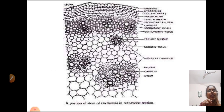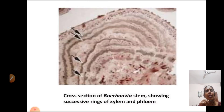You can see here different rows of vascular bundles. This is a portion of the stem of Boharavia in a transverse section. You can see the cross-section of Boharavia stem showing the successive rings of xylem and phloem.